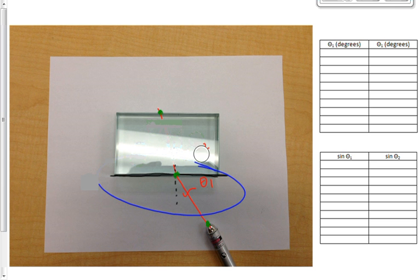Once you've got these dots plotted here, we can completely take away the glass, we can completely take away everything. The reality is we can redraw that by simply joining those dots, and then we can measure from your normal line theta 2 and theta 1. So you've got one piece of data, one trial for theta 1 and one trial for theta 2.